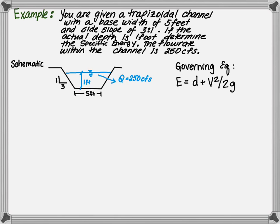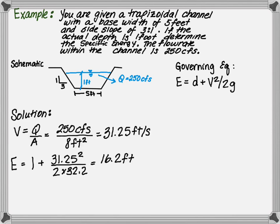The specific energy is the depth plus velocity squared over 2g. We calculate the velocity as the flow rate divided by the area. The area was determined in the previous problem to be 8 square feet. The velocity as a result is 31.25 feet per second.